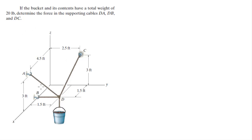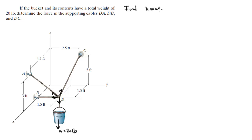So they want you to find the tension on each of these cables. Basically, what you need to understand is you have four unit vectors: one going towards C, one going towards A, one going towards B, and one going towards the bucket, which is holding the weight. You know that the bucket weighs 20 pounds. The first thing we're going to do is find all the points involved, because we need to find the unit vectors.